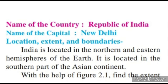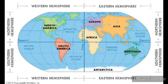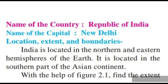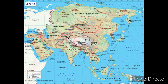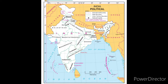India is located in the northern and eastern hemisphere of the world. When we look at the world map, India is situated above the equator, meaning it is in the northern hemisphere. India is also located in the southern part of the Asian continent — when we compare India to the Asian continent, India occupies the southern part of Asia.